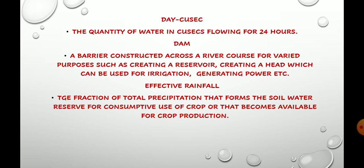Effective rainfall is the fraction of total precipitation that forms the soil water reserve for consumptive use of crop, or that becomes available for crop production. The fraction of total rainfall which forms the soil water reserve and is utilized by the plants for their consumptive use or for crop production is known as effective rainfall.